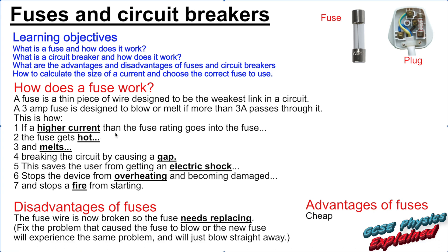If a higher current than the fuse rating goes into the fuse — say this three amp fuse — the fuse will get hot, because current makes wires get hot, and it will melt and snap, breaking the circuit by causing a gap. The good thing about that is it saves the user from getting an electric shock, stops the device from overheating and becoming damaged, and could also stop a fire from starting.